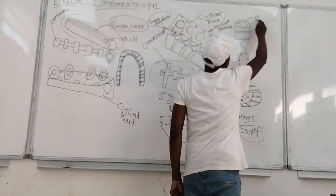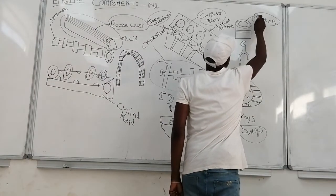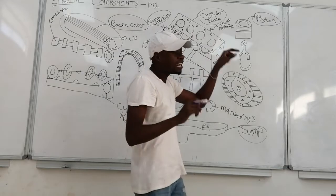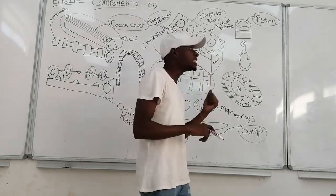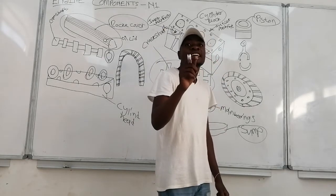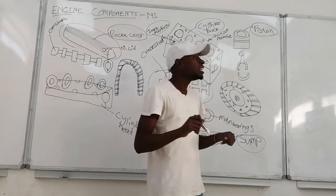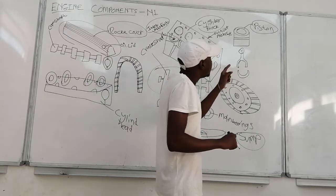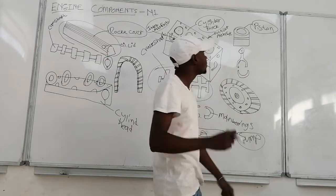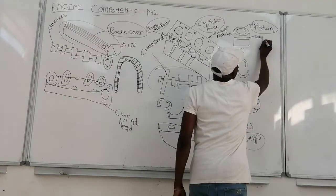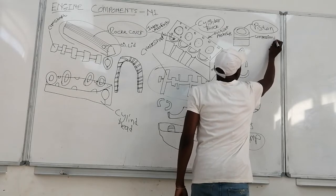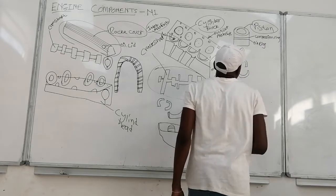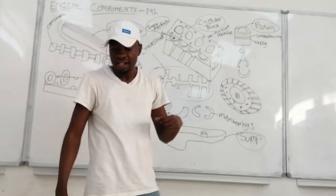What is the function of the piston? The function of a piston is to create a rotational movement on the crankshaft. In other words, the piston converts chemical energy into mechanical energy. That's the function of a piston.